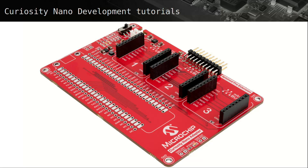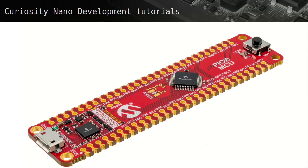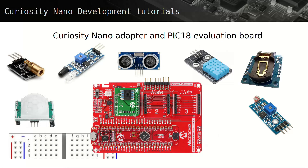The Curiosity Nano development series uses a Curiosity Nano adapter, which allows various Curiosity Nano evaluation boards to be installed. There are evaluation boards from the PIC, AVR, SAM and tinyAVR families. The PIC 18F57Q43 Curiosity Nano evaluation board will be used in this series of tutorials, with various combinations of click boards and sensors. There are tutorials featuring a single Curiosity Nano adapter with PIC 18 evaluation board.